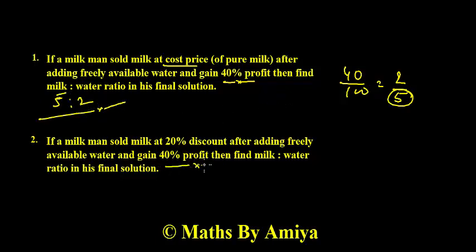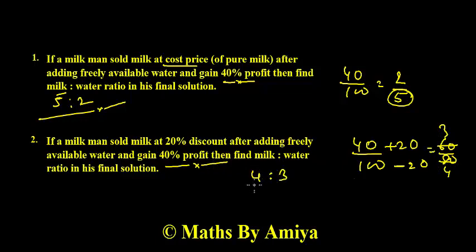In this, the 40% and we need to sell at 20% discount. That means 40 upon 100 is the profit ratio. 20% discount is minus 20 and plus 20. Because we need 140 always. This becomes 60 and this becomes 80. So the ratio is 3 to 4. 4 is the milk part. And water part is 3. I hope it is clear to you.